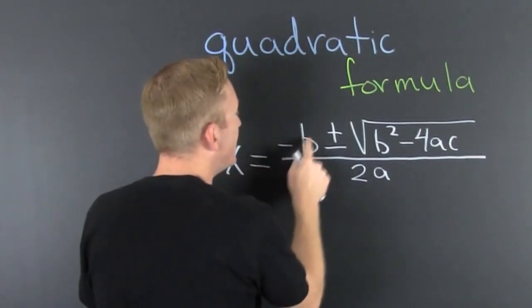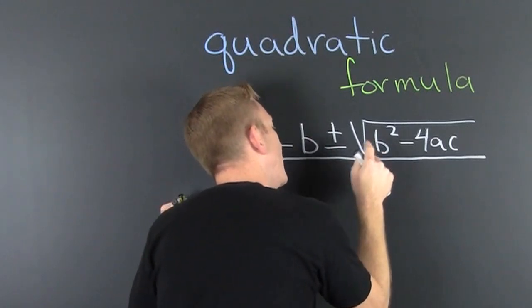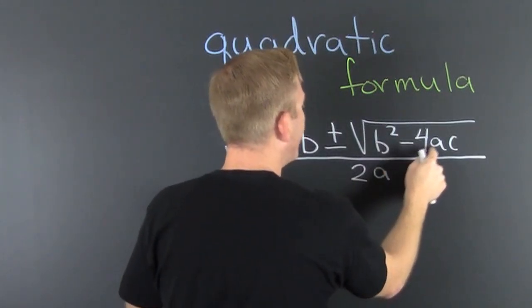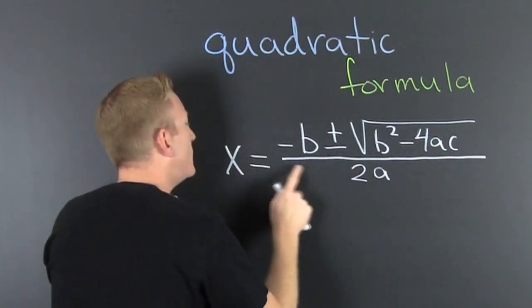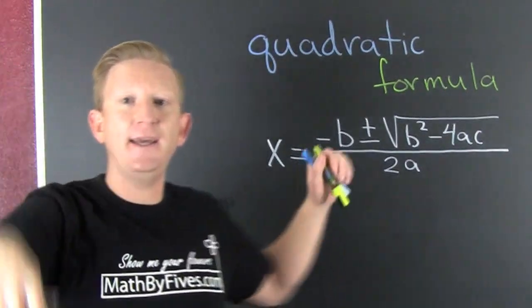X is equal to minus b plus and minus square root b squared minus 4ac all over 2a. Again, again.